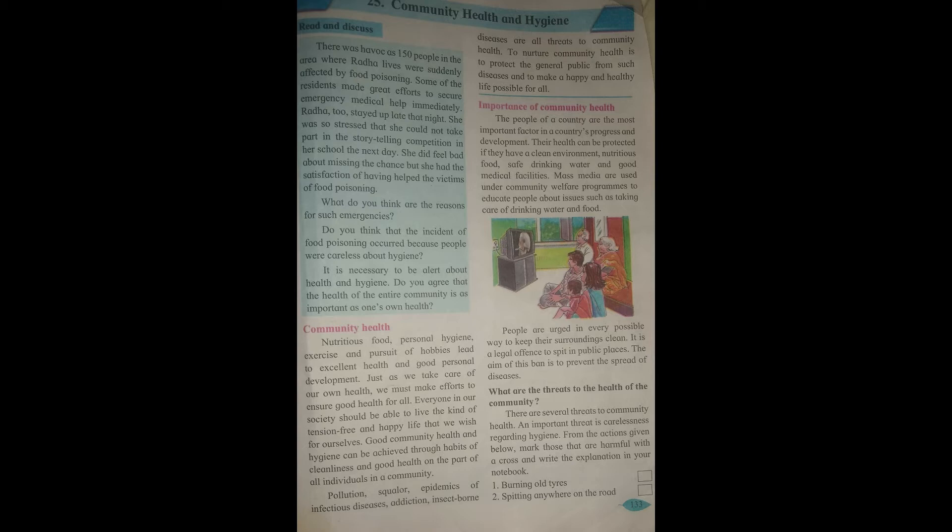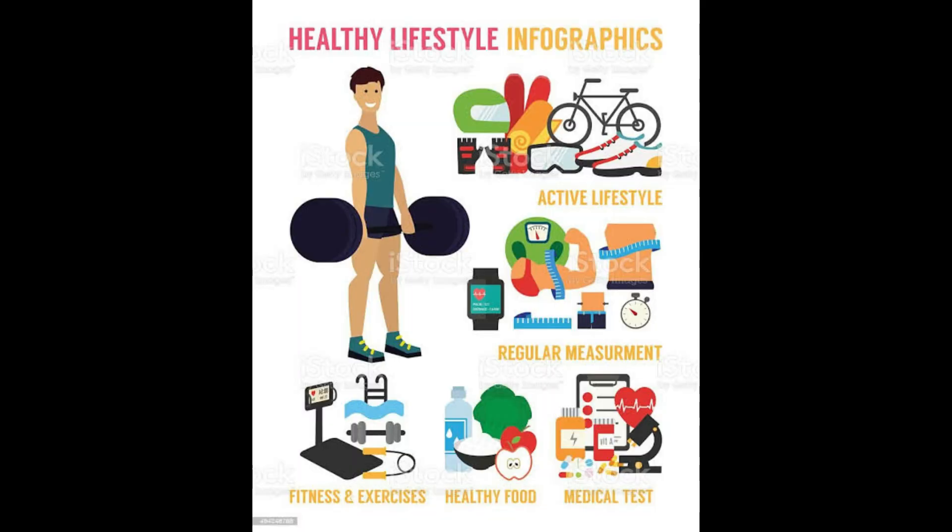What is given to us about community health? Let us see the good health prospects given in the lesson. Nutritious food — that is balanced diet, which we have studied. Then personal hygiene, to keep ourselves clean. We should do regular exercise and develop good hobbies which will make us healthier. We must make efforts for the good health of all in the family. Everyone in the society should be free from tension and we should live a happy life, helping each other. Good community health and hygiene can be achieved by developing good habits of cleanliness and good health.